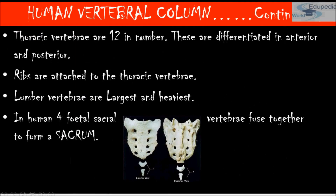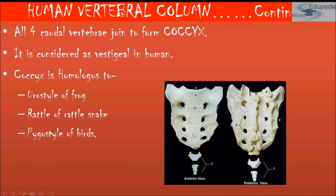Thoracic vertebrae are 12 in number and differentiated into anterior and posterior. Ribs are attached to the thoracic vertebrae. The 4 caudal bones are joined to form the coccyx, which is considered vestigial in humans and is homologous to the urostyle of frogs and the rattle of rattlesnakes.